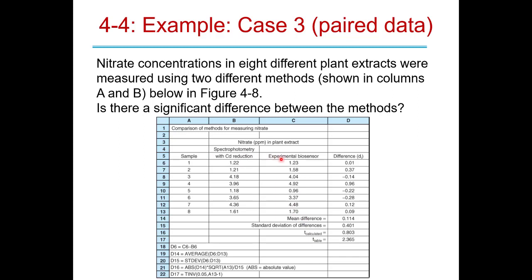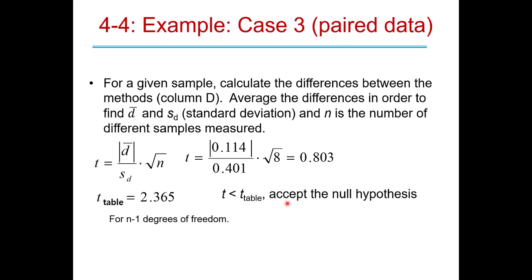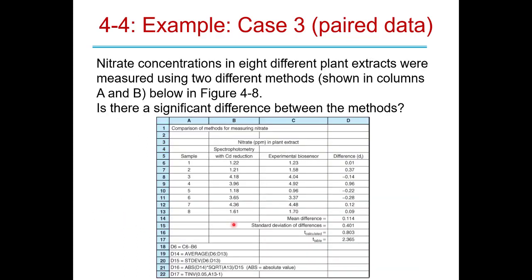This is good news — it means the biosensor method agrees with the cadmium reduction spectrophotometry method. Since the biosensor is likely easier to use than working with toxic cadmium, validating its agreement encourages switching to it. T from the table for Case 3 uses n minus 1 degrees of freedom, where n is the number of paired samples.